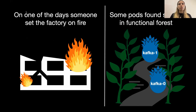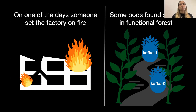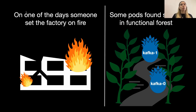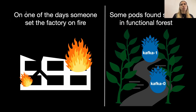On one day, someone set the factory on fire — the factory where all Kubernetes objects were created — and at that point no one was able to create any new object in that Kubernetes world. So they were just staying as they were, with some pods getting more and more away from that world and disappearing. With a lot of anomalies happening, at some point some pods decided to escape to the functional forest because it seemed more safe — like Kafka-0 and Kafka-1, who escaped there.